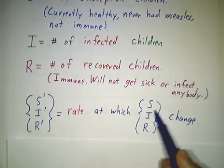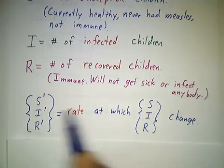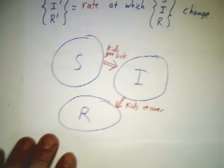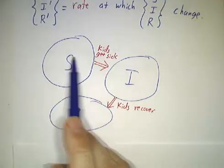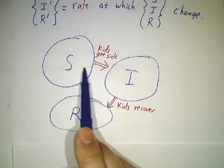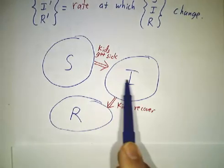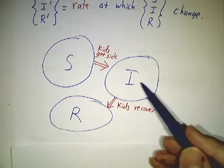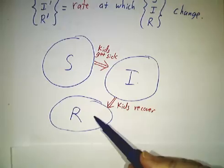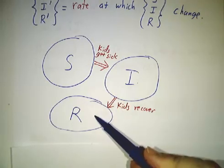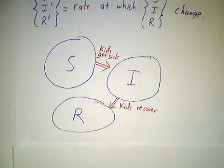So if you measure S in people, S' would be in people per day or people per week. And the model is that susceptible kids sometimes get sick. So sometimes you have to keep track of at what rate are susceptible kids becoming infected. And infected kids recover after a while. You keep track of the rate at which infected becomes recovered, and you put it all together and you get your equations.